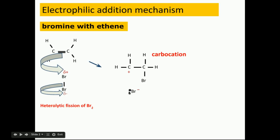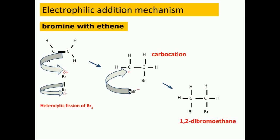I'm sure you can work out what's going to happen next. The pair of electrons on the Br minus ion are going to be attracted to that positively charged carbon and form a covalent bond between the bromine and the carbon. So we get our product, 1,2-dibromoethane. Why is it called electrophilic? It's because it involves an electrophile, this bromine here, because it is accepting a pair of electrons.